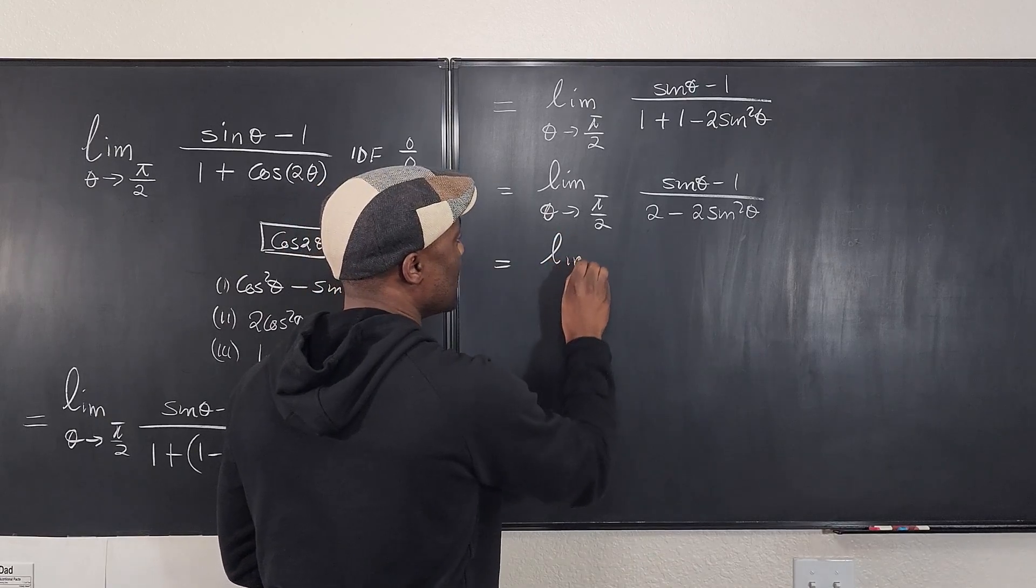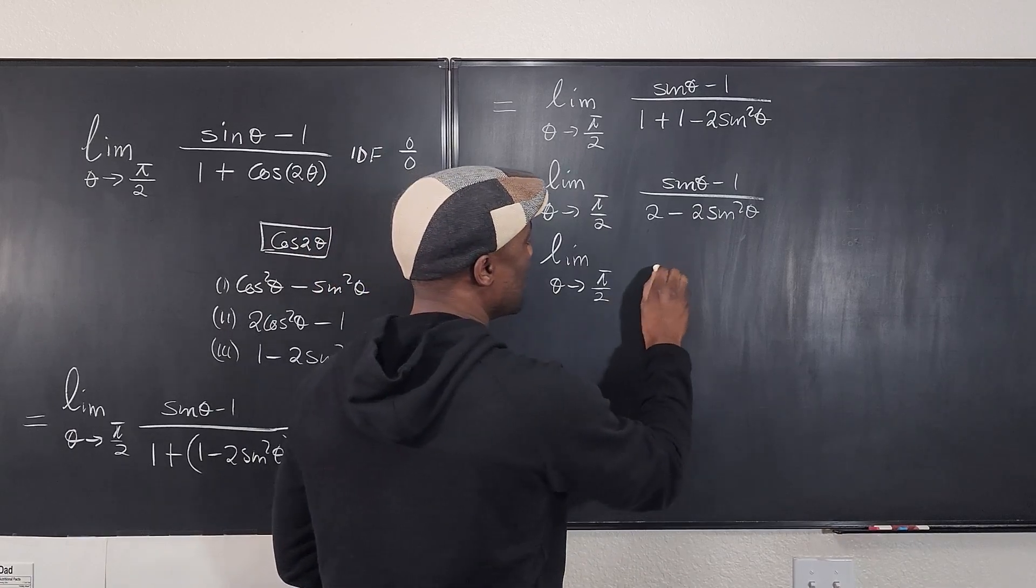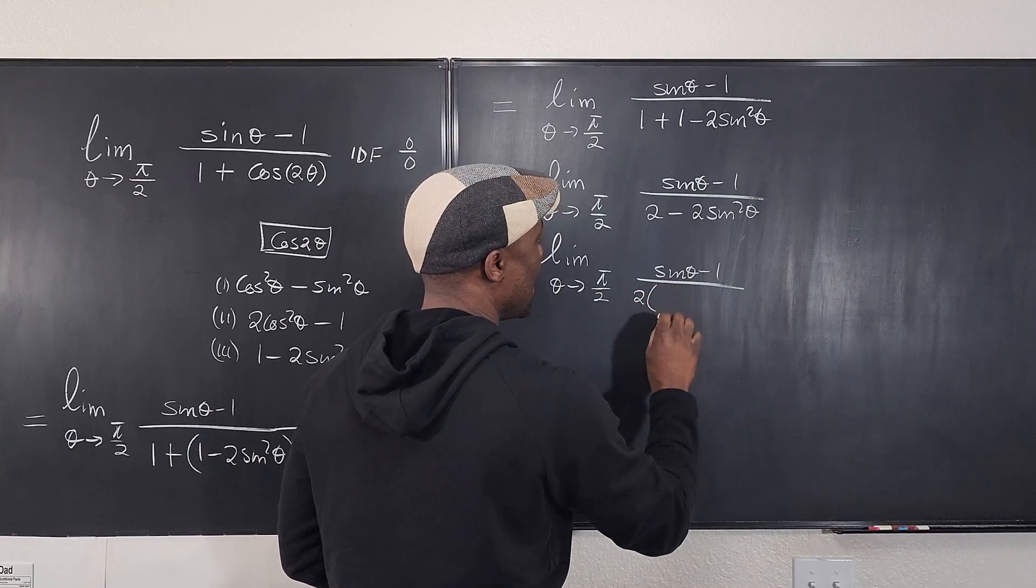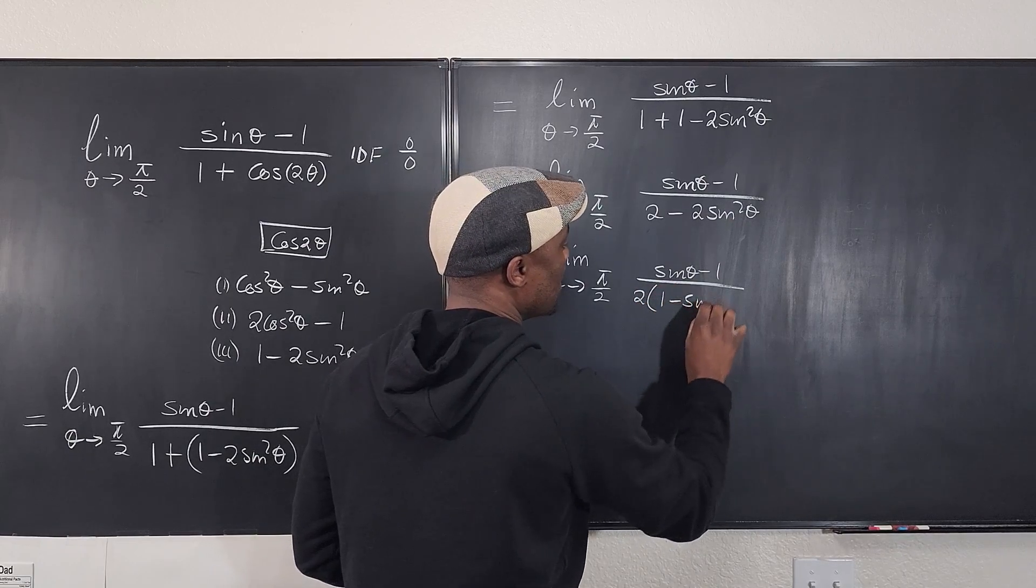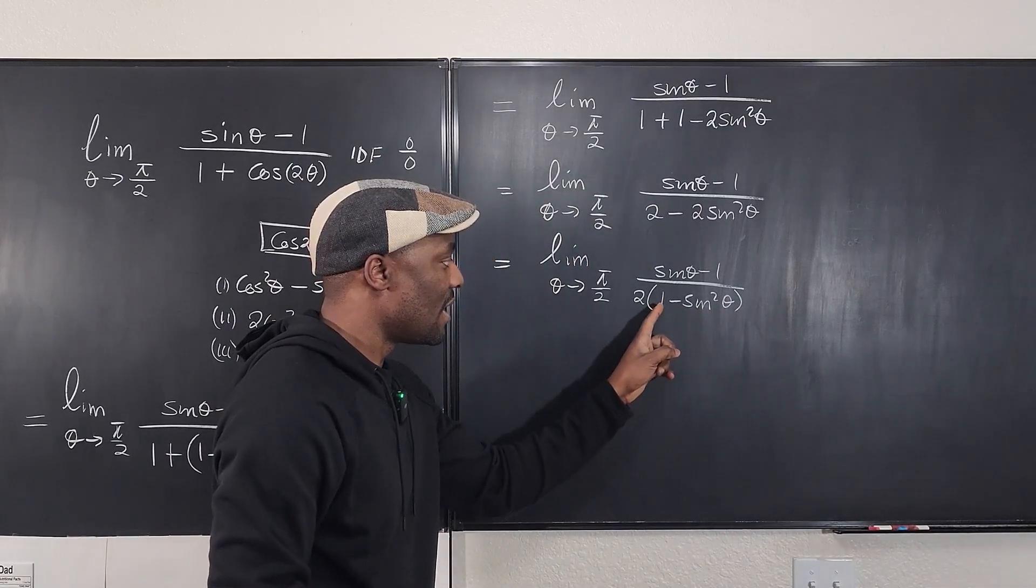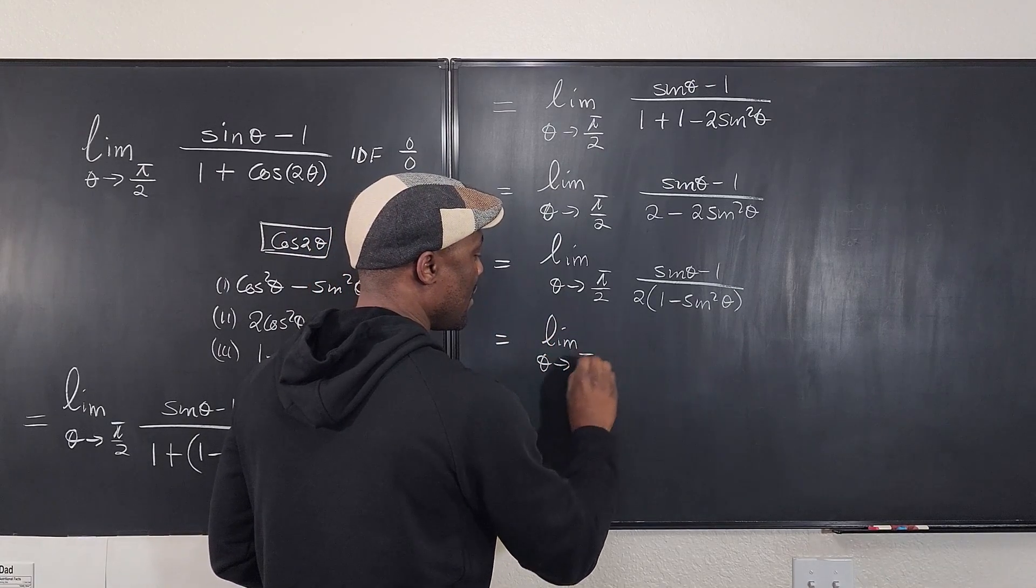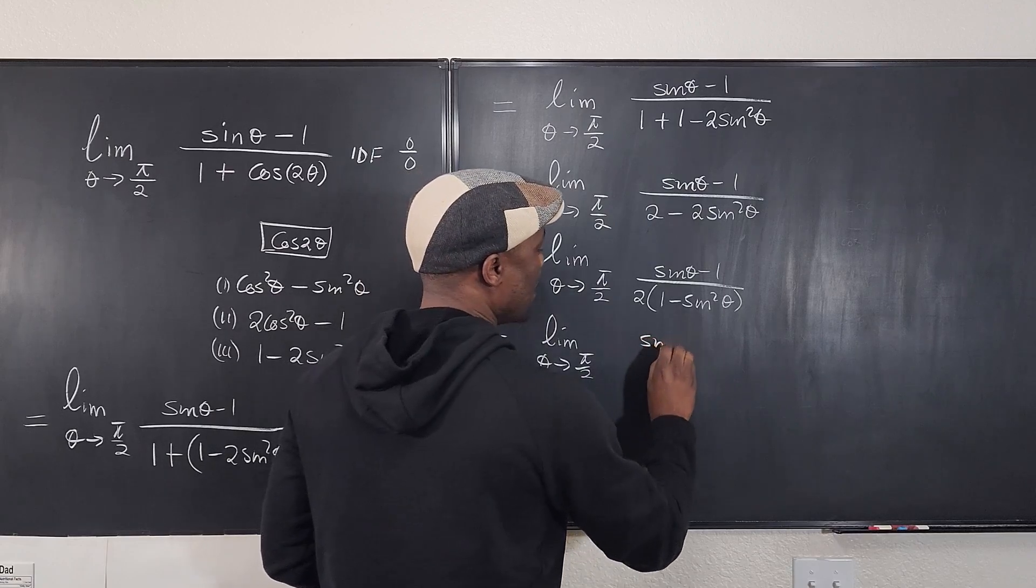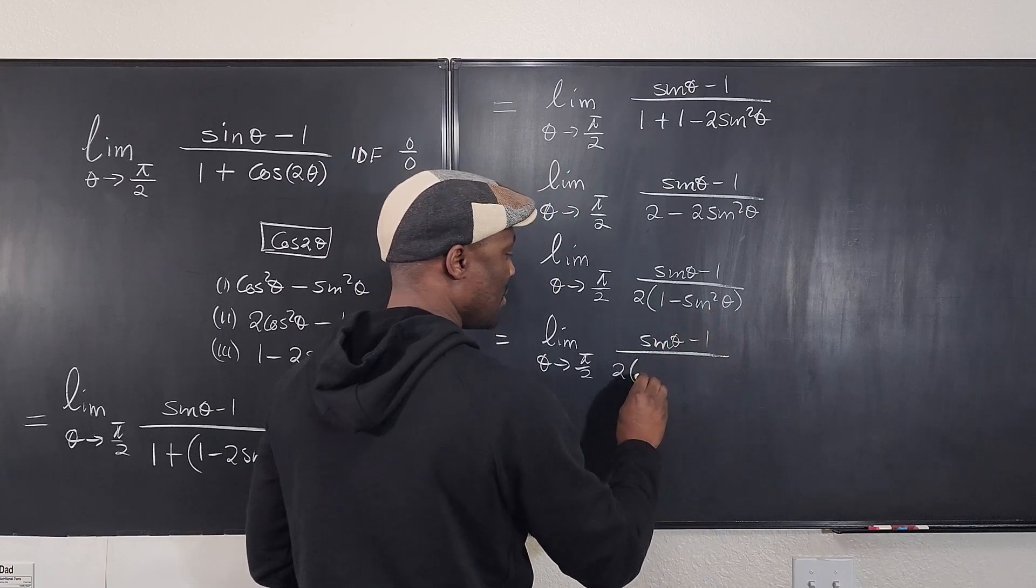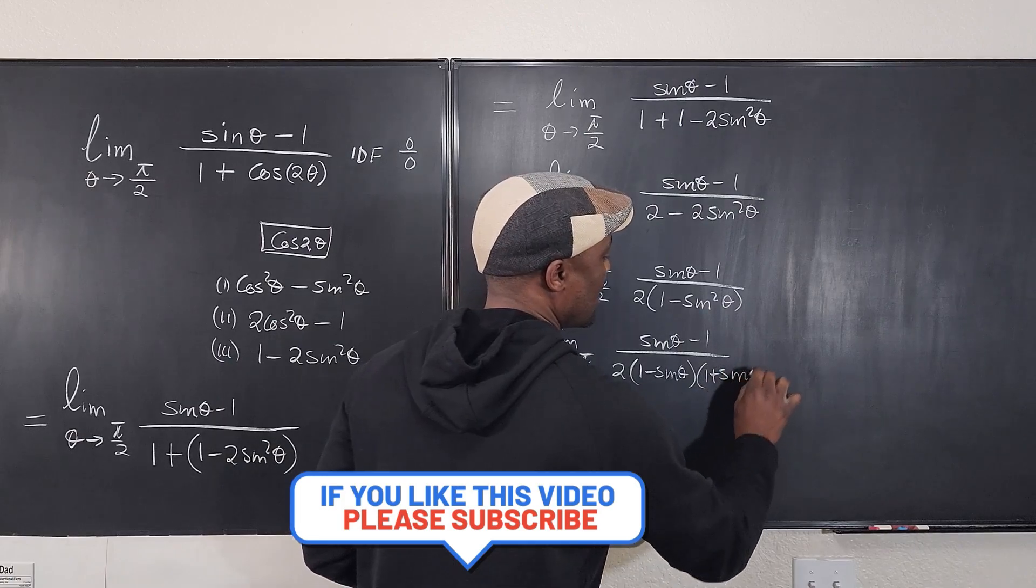Okay, so this is going to be equal to the limit as θ goes to π/2 of sinθ minus 1 divided by 2 times 1 minus sin²θ. Now, this is that difference of two squares that I talked about. This is 1² minus sin²θ, which is the limit as θ goes to π/2 of sinθ minus 1 over 2 times, here it becomes 1 minus sinθ, and 1 plus sinθ.